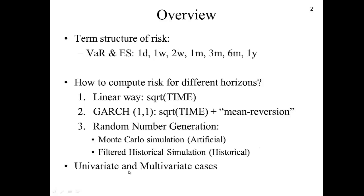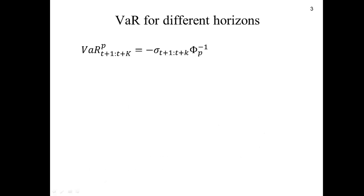Finally, we're going to cover both the univariate and the multivariate case. This slide reviews previous chapters. We know that Value at Risk is minus the standard deviation over t+1 to t+k times the inverse normal.